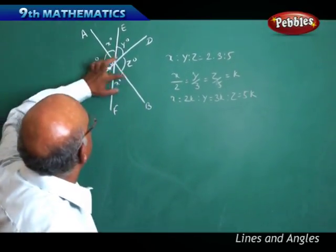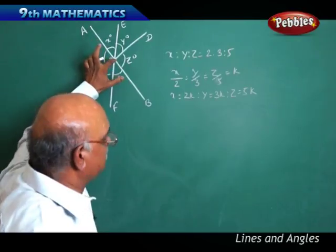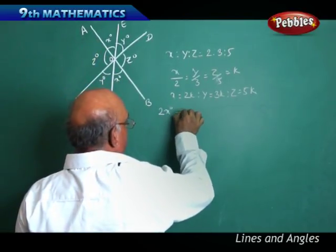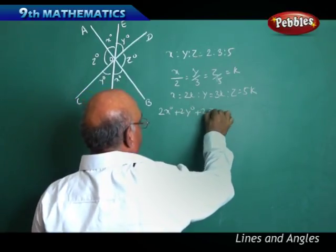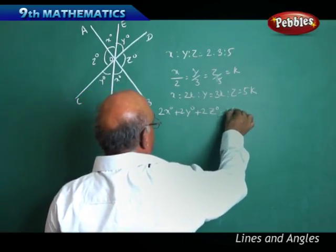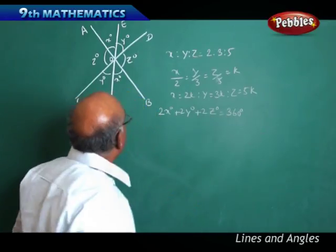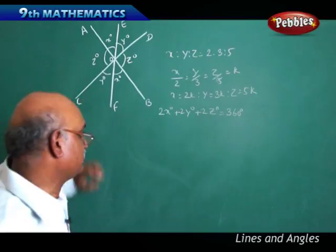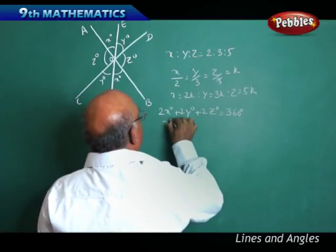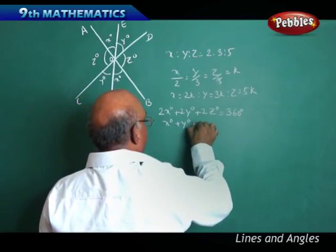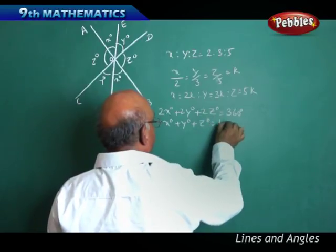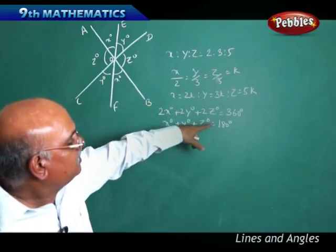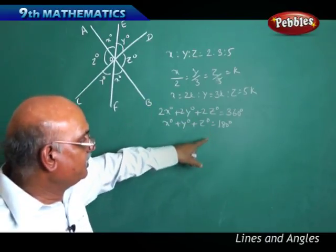The sum of these angles is equal to 360 degrees. That is 2X degrees plus 2Y degrees plus 2Z degrees equals 360 degrees, because at the origin the sum of angles is 360. This simplifies to X plus Y plus Z equals 180 degrees, taking the common factor 2.